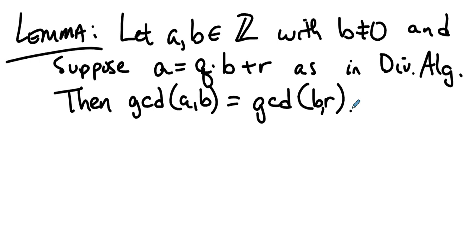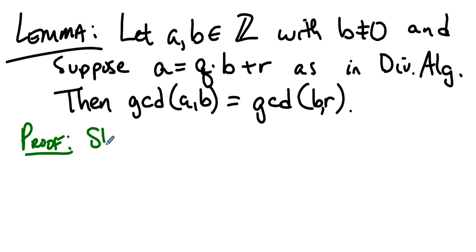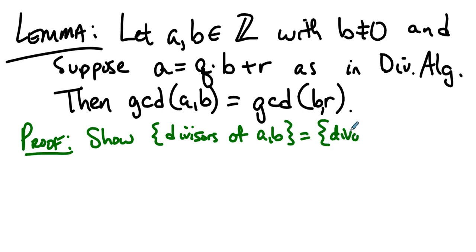The greatest common divisor of a and b is the greatest common divisor of b and r. The proof is to show that this number equals that one. We are going to show that the divisors of a and b are the same as the divisors of b and r, and therefore the greatest common divisor of a and b must be the greatest common divisor of b and r. To show two sets are equal, we show each is a subset of the other.